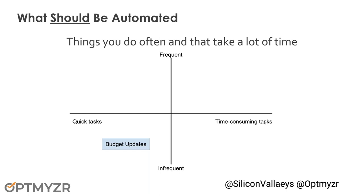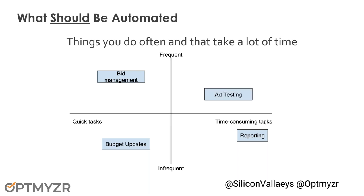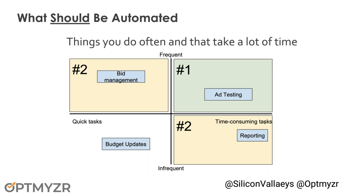I take my list of tasks for PPC and put them on this quadrant. Updating budgets is relatively quick — I do it about once a month. Managing bids is a pretty frequent task but doesn't take a lot of time. Reporting I don't do all that often, but it takes a lot of time — it can take four or five hours a month to put together a nice report. Ad testing is pretty ongoing; it happens all the time and can be somewhat time-consuming because you really have to think about what message will resonate with users.